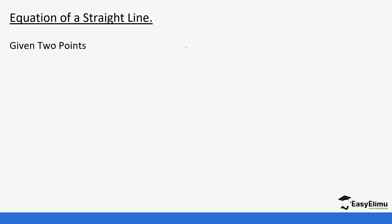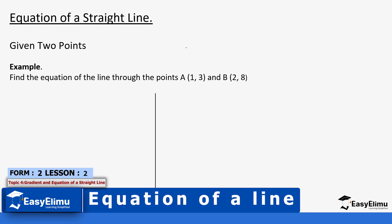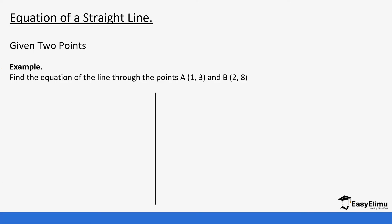First, you can get the equation of a straight line when you are given two points. For example, you are given a question to find the equation of a line through point A and point B with the coordinates given. The first thing to do is to find the gradient, and we said gradient equals change in y, that is y2 minus y1, over x2 minus x1. We need to identify these values in the points given.